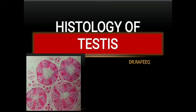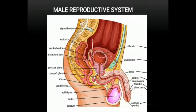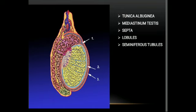Next topic to learn is histology of the testis, or microscopic structure of the testis. The male reproductive system consists of a pair of organs called the testis and epididymis. In the testis, spermatogenesis happens, and in the epididymis, the formed spermatozoa are matured. These mature spermatozoa are transported through an elongated tubular passage called the vas deferens, which joins with the seminal vesicles to form the ejaculatory duct within the prostate gland. This ejaculatory duct opens into the prostatic part of the urethra, and the last part is the male urethra.